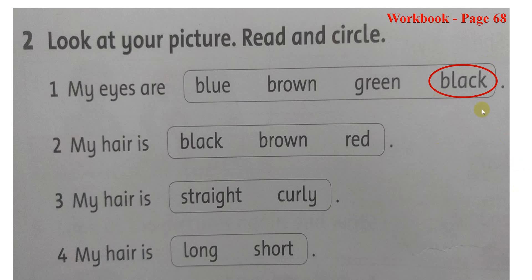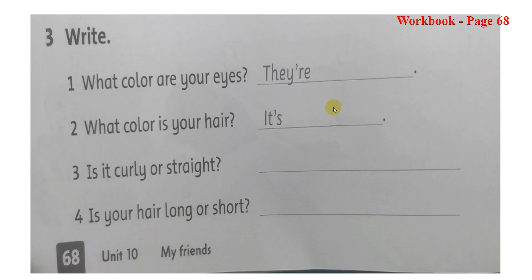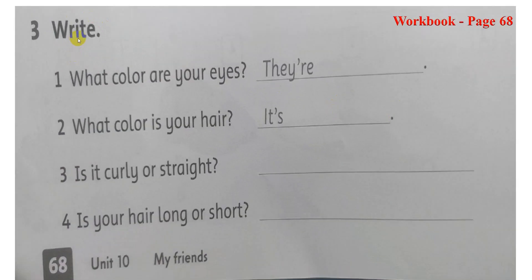Các con hoàn thành phần 2 xong, chúng ta tiếp tục qua phần 3, write. Phần 3 là viết. Yêu cầu các con là trả lời câu hỏi. Các con hãy nhìn lại bức tranh mà chúng ta vừa vẽ ở phần 1. Sau đó chúng ta sẽ đọc câu hỏi và trả lời câu hỏi. Phần 3 cho cô ha.